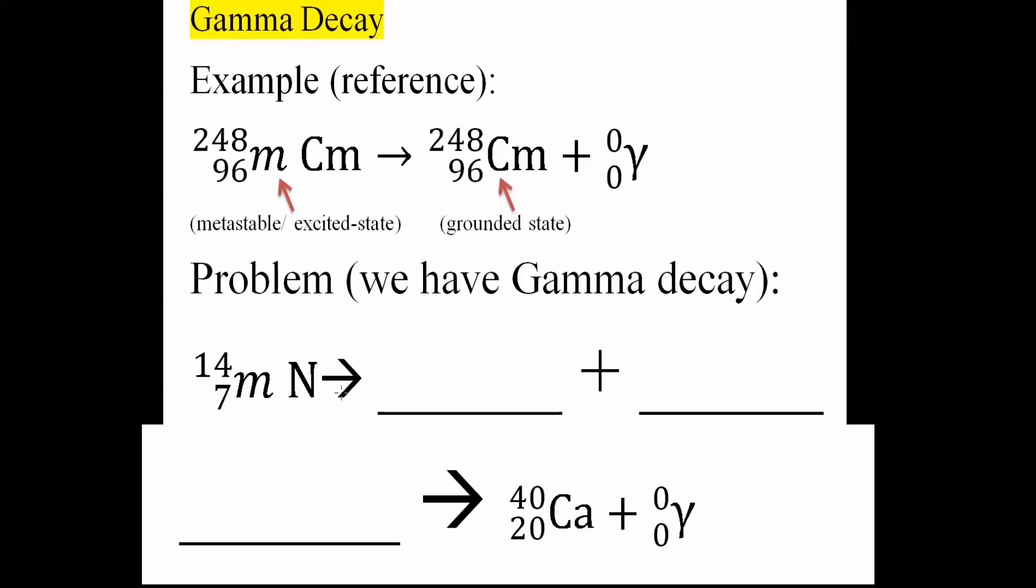So now let's solve these two problems. So we have metastable nitrogen, atomic mass of 14, atomic number 7. And so what's going to happen, it's just going to be ground state. So it's going to be 14, 7, nitrogen. And now you write your gamma symbol, and that's it.